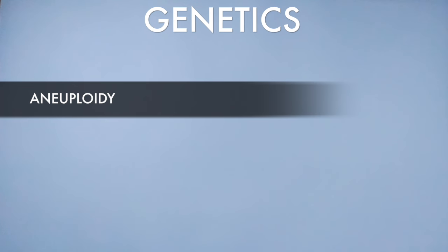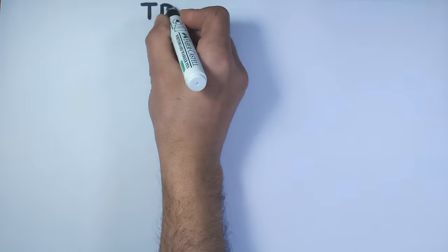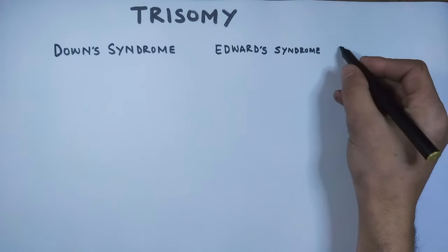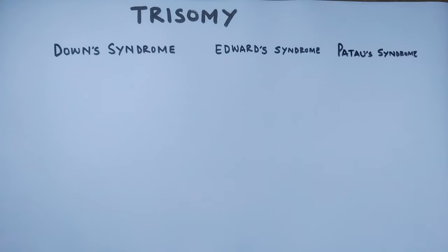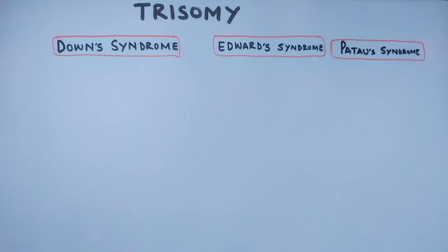We have been discussing about genetics, where we discussed about aneuploidy and Down syndrome. Now here we will be discussing about trisomy in general — Down syndrome, Edwards syndrome, and Patau syndrome — and also why Down syndrome occurs more frequently than the other two trisomies. So let's get started.